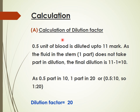For calculations, first determine the dilution factor. 0.5 units of blood is diluted up to the 11 mark; the fluid in the stem (1 part) does not participate in dilution, so the total effective dilution is 10. Since 0.5 parts of blood yields a 10-part dilution, for 1 part the dilution factor is 20.